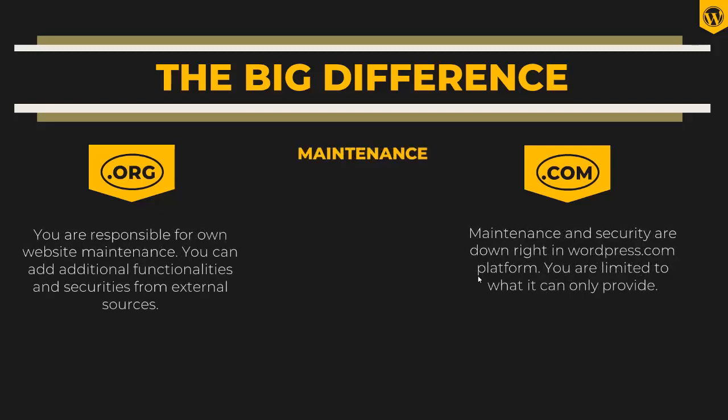When it comes to maintenance, with .org you are responsible for your own website maintenance. You can add additional functionalities and security from external sources — for example, you can buy and install a sophisticated SSL certificate. But with .com, maintenance and security are handled by the WordPress.com platform. You are limited to what they provide; you cannot source your own security or maintain it from your own hosting platform.